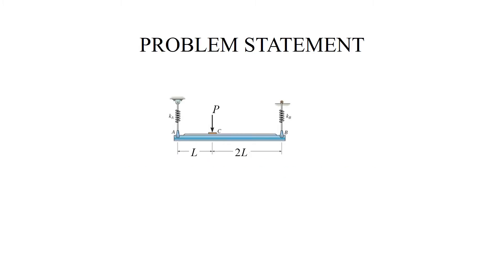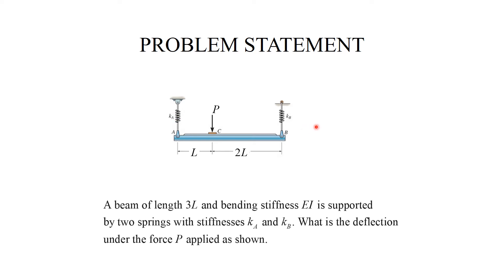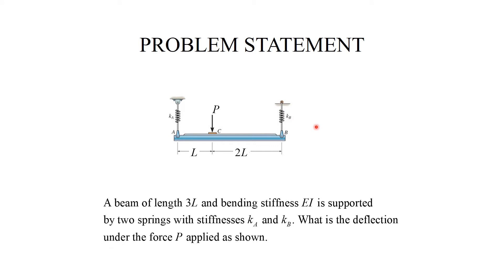So, the beam of interest has length 3L, the force P is applied eccentrically, and we have two different springs, KA and KB, and the beam has uniform stiffness, EI. Our objective is to calculate the deflection at the point C, the deflection under the force P.